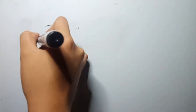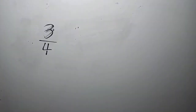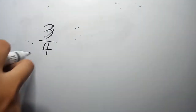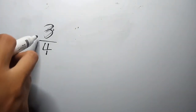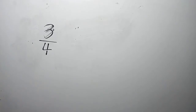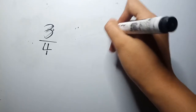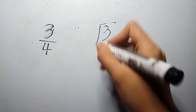Now let's have an example. For example, 3 fourths. As I said, to convert a fraction to decimal form, we will just divide the numerator by the denominator. In the given 3 fourths, the numerator is 3 and the denominator is 4. So we will just divide 3 divided by 4.